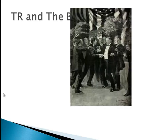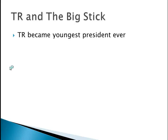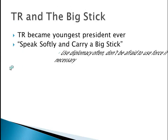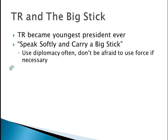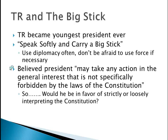TR becomes president in September 1901 when McKinley in Buffalo is shaking hands. An anarchist comes up holding a handkerchief around his hand with a gun inside, and shoots him twice in the stomach. Secret Service starts beating the guy up and McKinley's response was, 'Go easy on him, boys.' TR becomes the youngest president ever — John F. Kennedy is the youngest president elected ever, but TR is the youngest president ever. His motto was speak softly and carry a big stick, meaning use diplomacy often but don't be afraid to use force if necessary. He believed the president may take any action in the general interest that is not specifically forbidden by the laws of the Constitution — so he favored a loose interpretation of the Constitution.